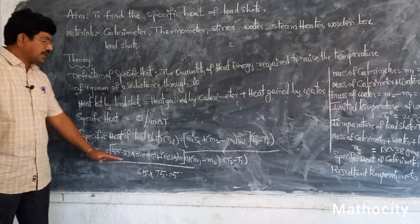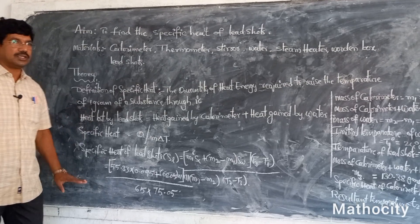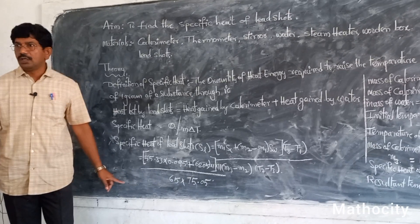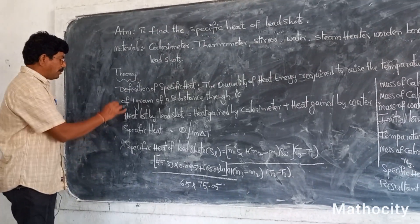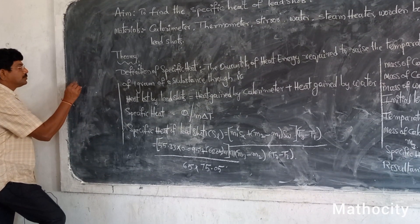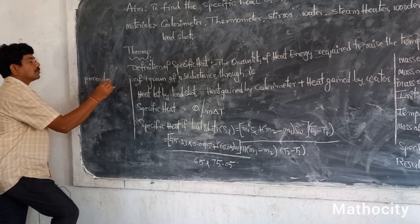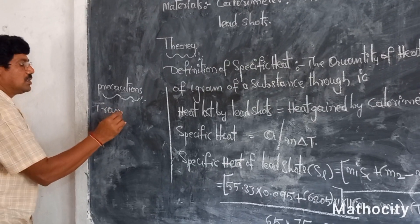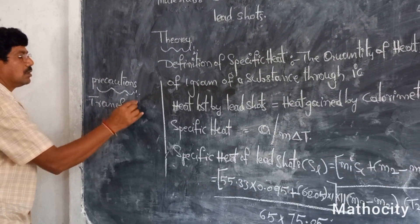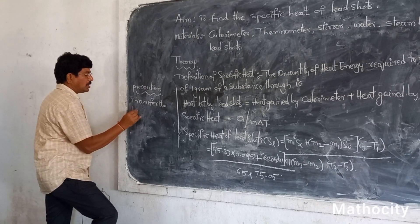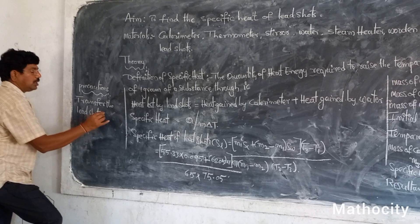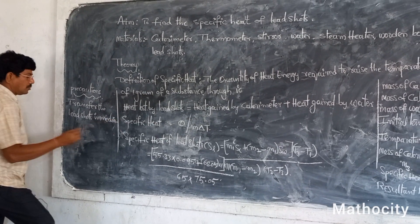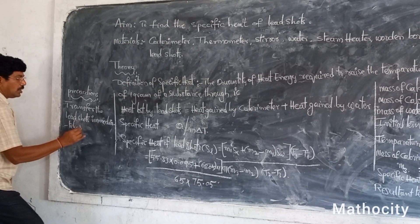If you do this calculation, you will get the specific heat of the lead shards. Write down these values in your notebook. Here I am writing the precautionary measures: transfer the lead shards immediately into the calorimeter without any loss of heat energy.